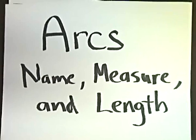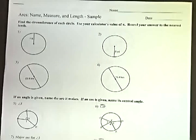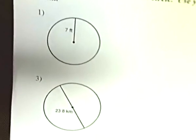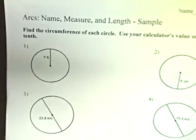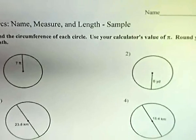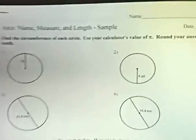Arcs, name, measure, and length. We're going to do a couple of these so you can get an idea of how to do them. Once again, the camera is not the best camera, so I'm going to try to show you as close as possible what we're going to do. The first section says find the circumference of each circle, and you can use the calculator's value for pi around your answer to the nearest tenth.